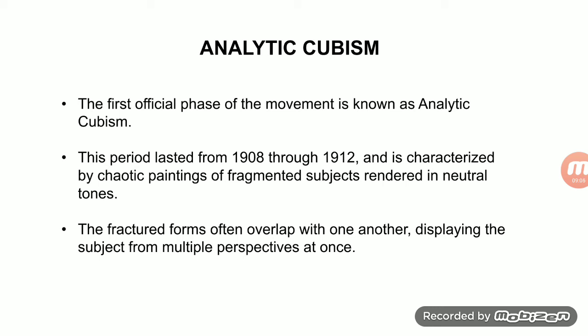The Analytical Cubism period lasts from 1908 through 1912 and is characterized by monochromatic painting of fragmentary subjects rendered in neutral tones. The fractured forms overlap with one another, displaying the subject from multiple perspectives at once.